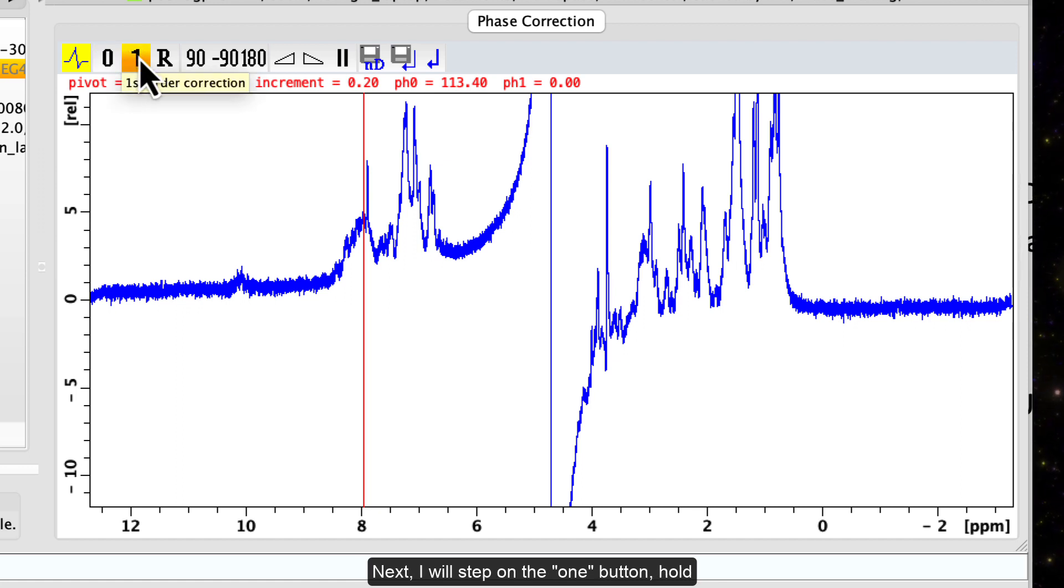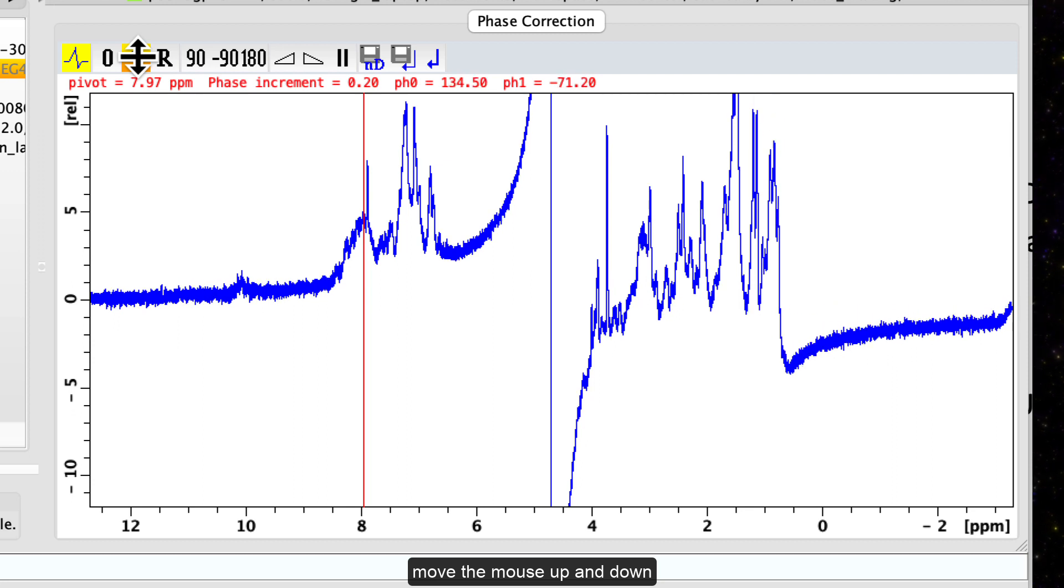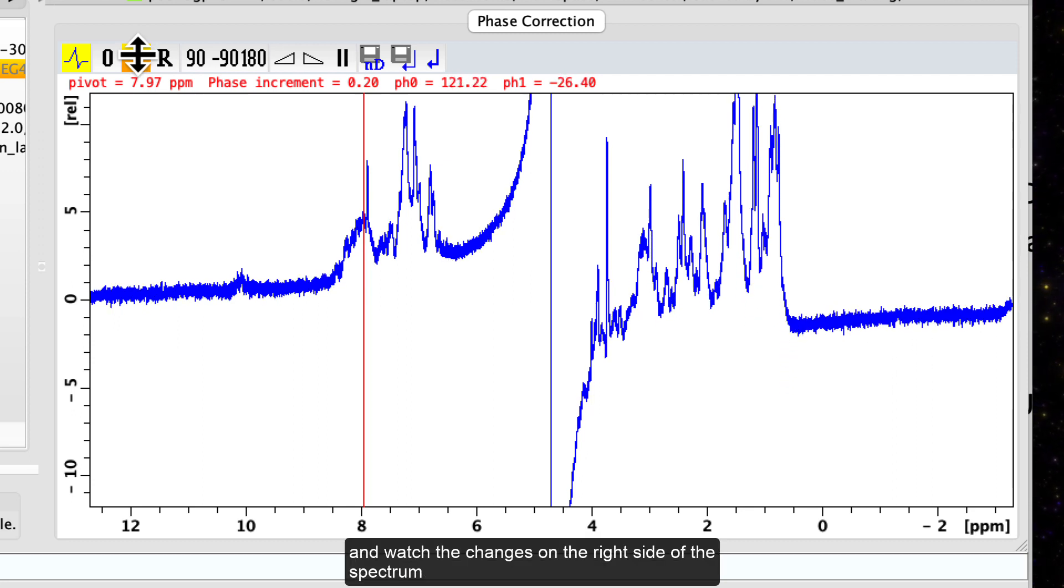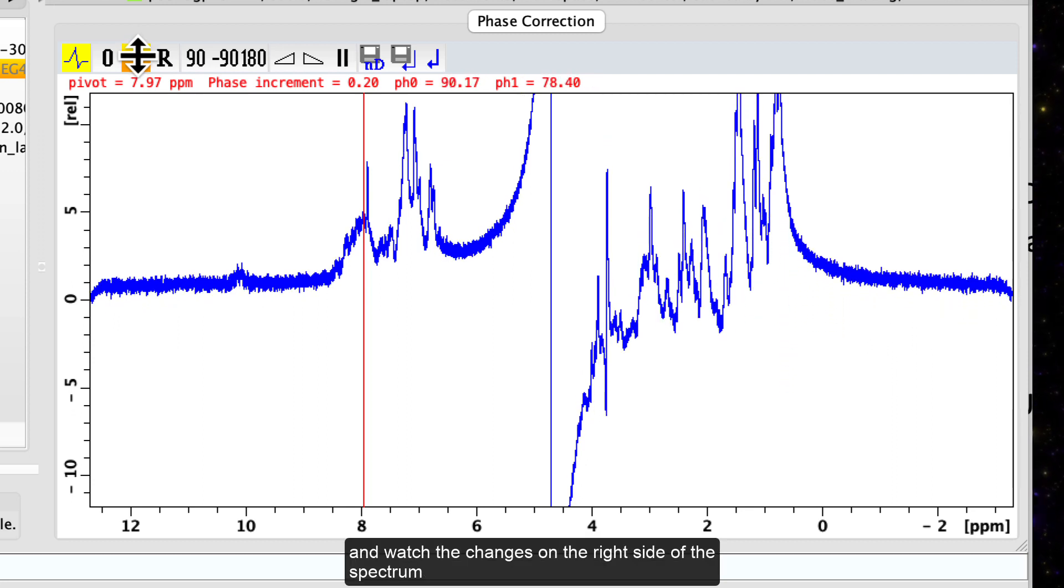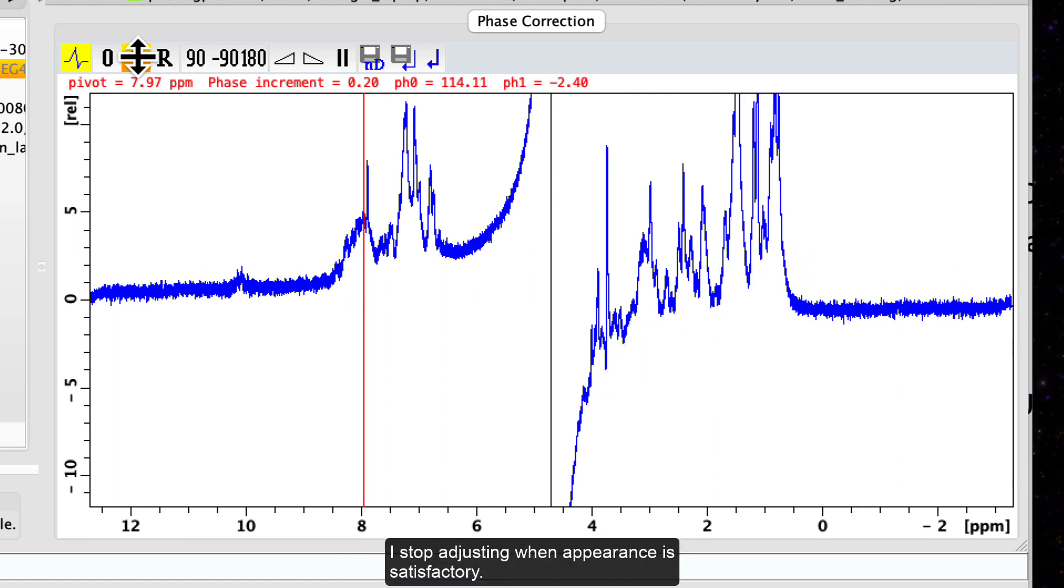Next, I will step on the 1 button, hold, move the mouse up and down and watch the changes on the right side of the spectrum. I stop adjusting when appearance is satisfactory.